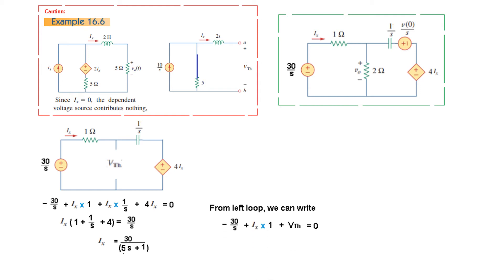With i_x known, we find V_thevenin by applying KVL around the left loop: −30/s + i_x·1 + V_thevenin = 0. Substituting the value of i_x and solving gives us the value of V_thevenin.